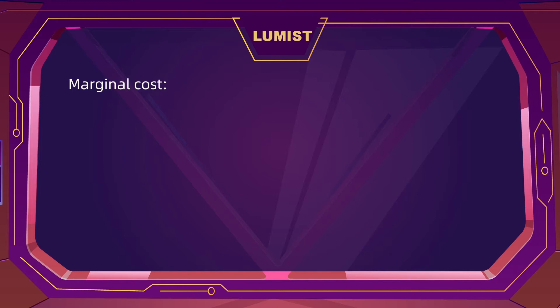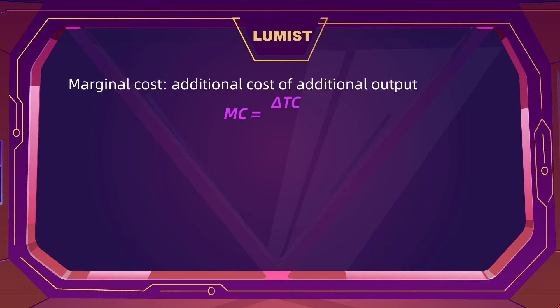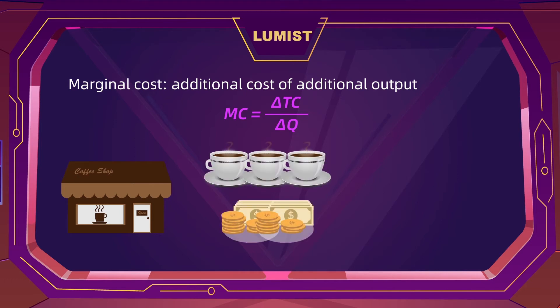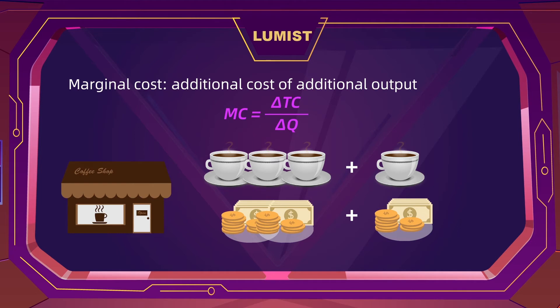Finally, we have marginal cost, which is the additional cost of producing one extra unit of output. Mathematically, that's the change in total costs divided by the change in units produced. For a coffee shop, marginal cost tells us how much extra cost we're going to incur to make our next cup of coffee, and as a producer we can decide if we want to make that cup of coffee or not.